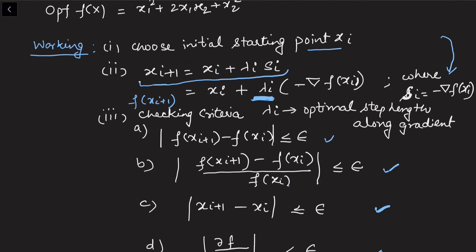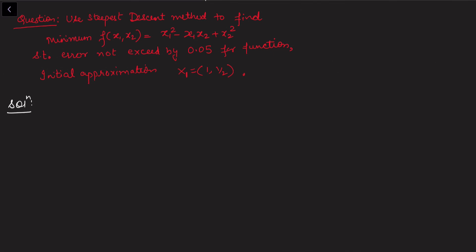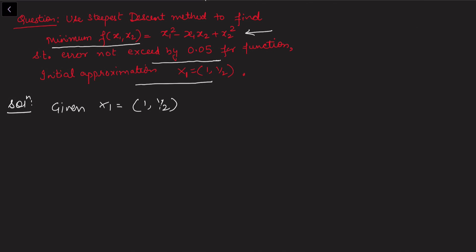Now let's apply this to a specific example. We want to use the steepest descent method to find the minimum of f(x1, x2) = x1² − x1x2 + x2², such that the error does not exceed 0.05. The initial approximation is given as x1 = (1, 1/2). The function value at this initial point, substituting x1=1 and x2=1/2, gives f(x1) = 3/4.